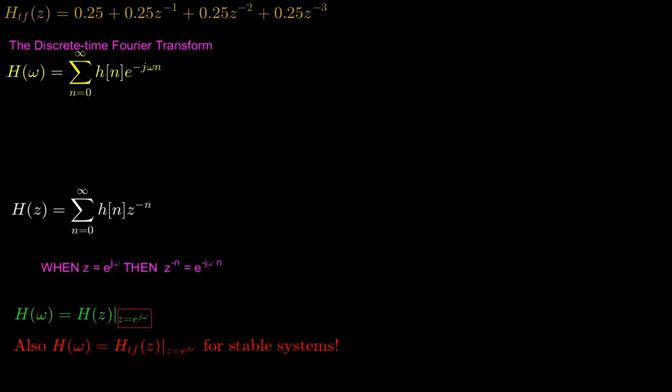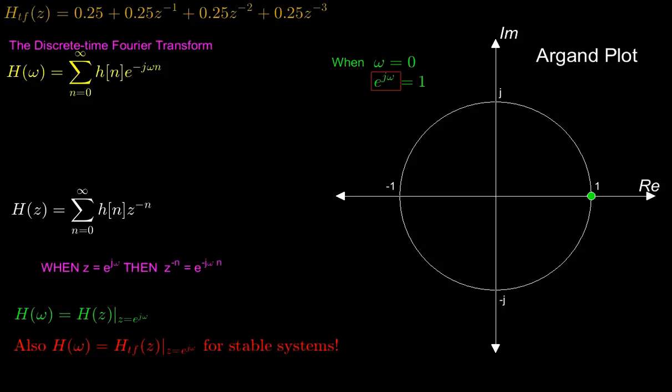And evaluating e^(jω) for different values of ω and displaying these values on the argand diagram shows that these values form a unit circle.